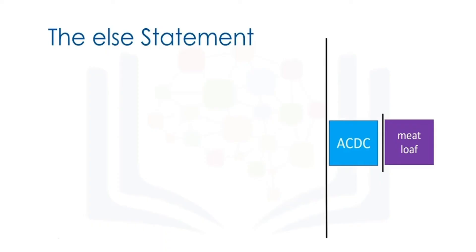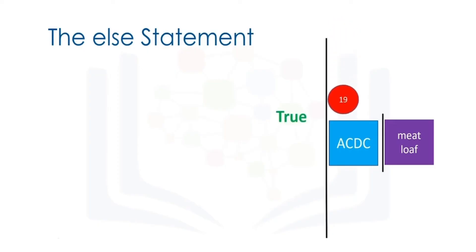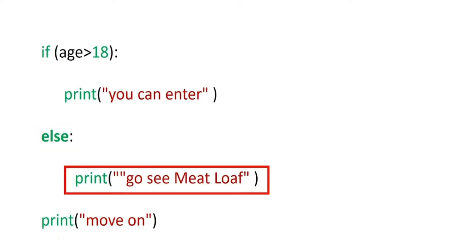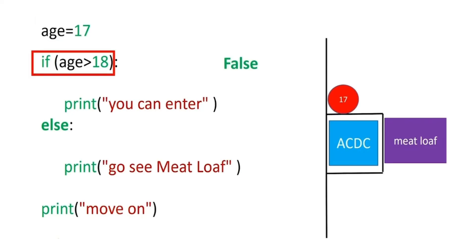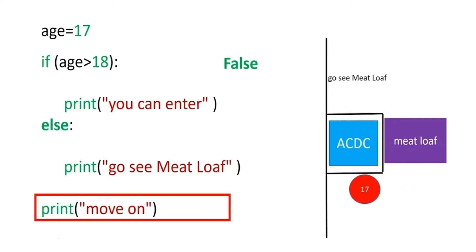The else statement will run a different block of code if the same condition is false. Let's use the ACDC concert analogy again. If the user is 17, they cannot go to the ACDC concert, but they can go to the meatloaf concert, represented by the purple square. If the individual is 19, the condition is true — they can enter the ACDC concert, then move on as before. The syntax of the else statement is similar: we simply append the statement else, then add the expression we would like to execute with an indent. For the case where the age is 17, the if statement is false, so we progress to the else statement and run the statement in the indent, corresponding to the individual attending the meatloaf concert. The program will then continue running.